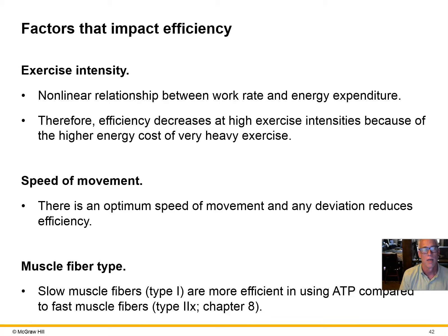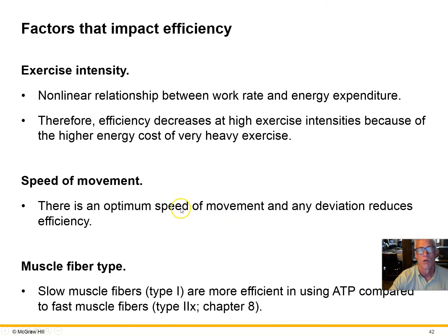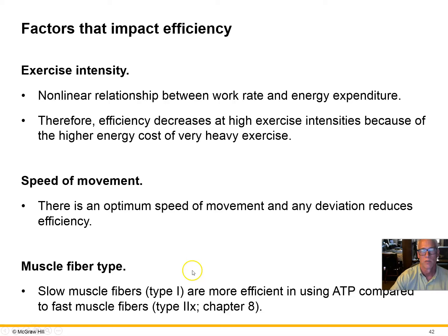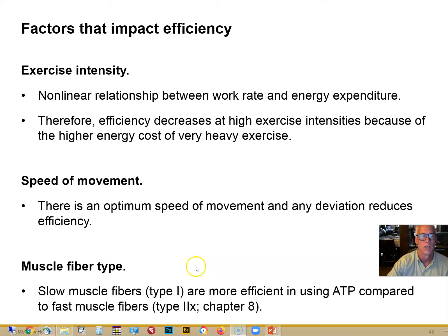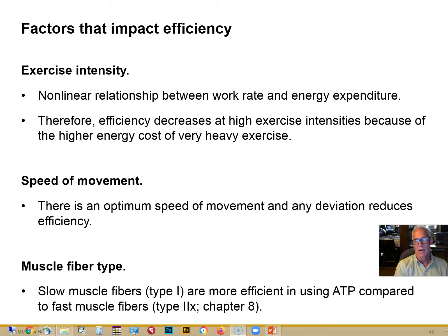There's an optimum speed for any particular activity to maximize efficiency. That's why if you watch a very well-trained cyclist pedaling up a hill, you may wonder why a particular gear was chosen. That person is very aware of the optimum efficiency cranking rate at that particular workload, so they operate at the highest possible efficiency — wasting the least amount of energy as they propel themselves up the hill during a race in which they need to conserve energy.